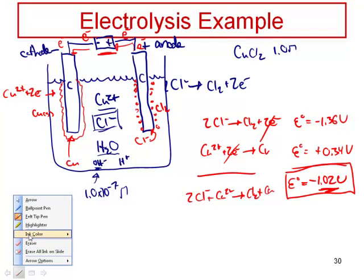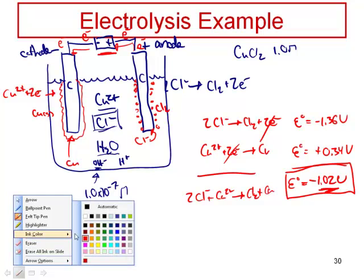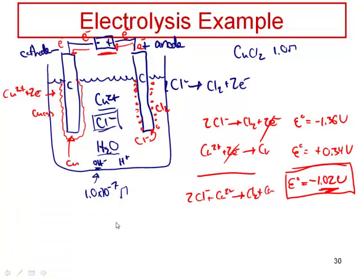Now we've seen how electrolysis works. We're forcing electrons to move against the natural flow, and we're causing it to happen with a battery. And when that happens, in this case, we're producing copper metal. Say for the sake of argument that I wanted to know how much copper I produce in this reaction. Because if I'm a chemist working in an industry and I'm refining metals, I need to be able to calculate it. I know that I can produce a metal by electrolysis, but I also want to calculate how much I can make in a certain amount of time.